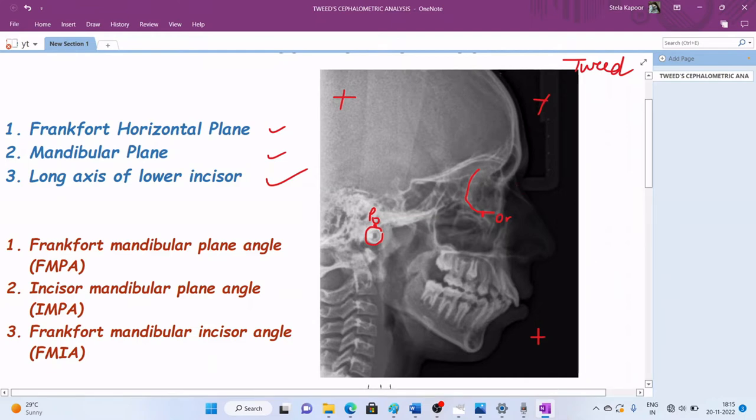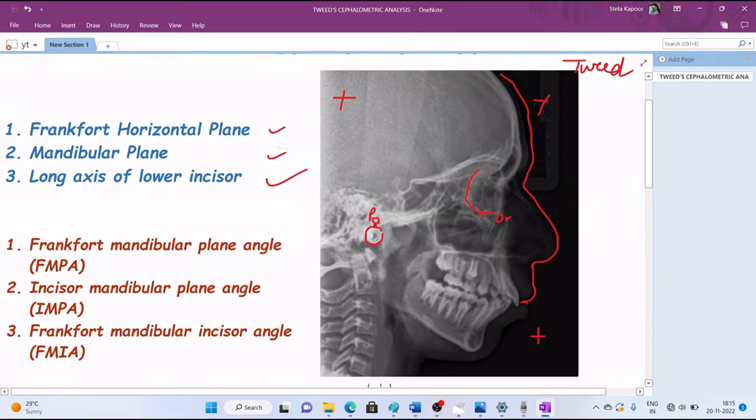When we start tracing, first we need to mark and trace the soft tissue of the face, and ideally you do it in a single go without lifting your pencil up. This is the soft tissue.